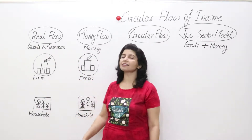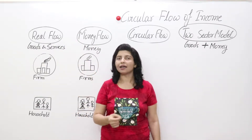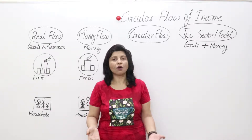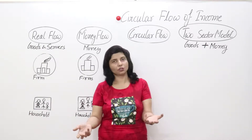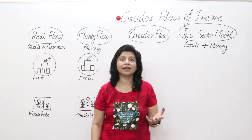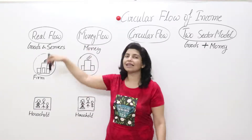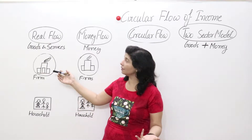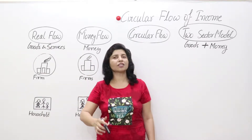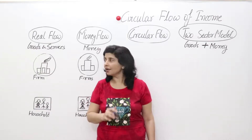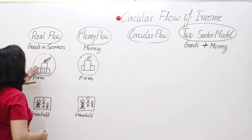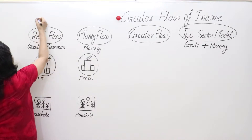Before discussing circular flow, we will discuss real flow and money flow. Can I ask you a question — do you eat money? No, of course we can never eat money because we cannot chew or digest it. So what do we do with money? We use it as a medium to buy goods and services. Suppose you live on an island with no money — that is a barter economy, where you exchange goods for goods or services for goods. Real flow means only goods and services; money is absent.